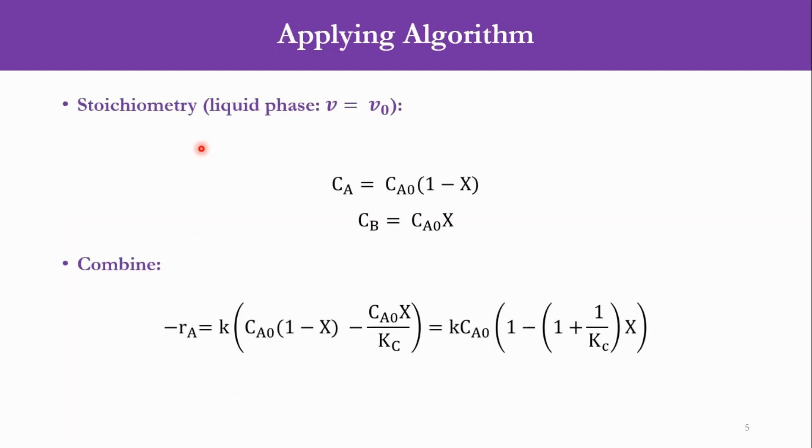Then applying the stoichiometry, we are given that it is a liquid phase system, so V equals V0. Accordingly, CA equals CA0 times 1 minus X and CB equals CA0 times X. Putting the values of CA and CB in the rate equation, accordingly we get the value as k times CA0 times 1 minus 1 plus 1 over Kc times X. If you have copy and pencil in your hand, you can simply apply the algorithms and the concepts of stoichiometry and combine to see how we get this equation.